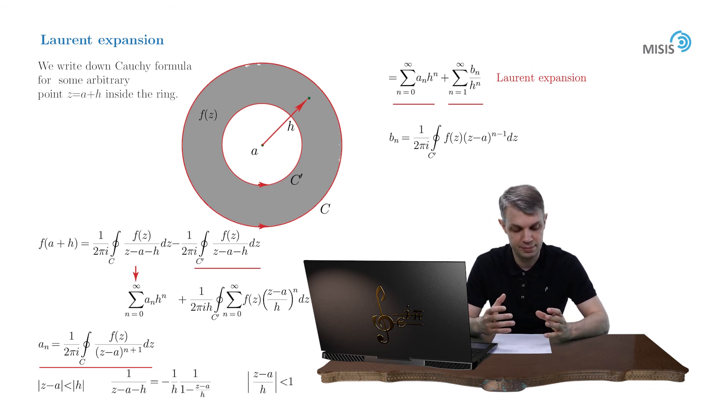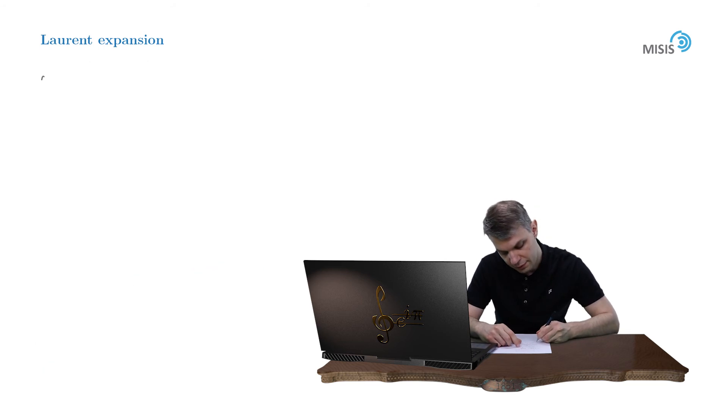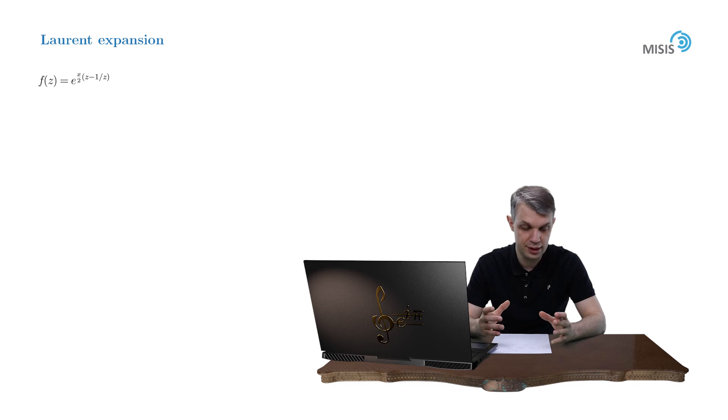Now let's consider some small example. Say we have a function f of Z equals e to the power of X over 2Z minus 1 over Z. It's a rather nice looking function, which is analytic in the entire complex plane with the exception of the point Z equals 0. And this way we'll build Laurent expansion of this function centered at the origin.